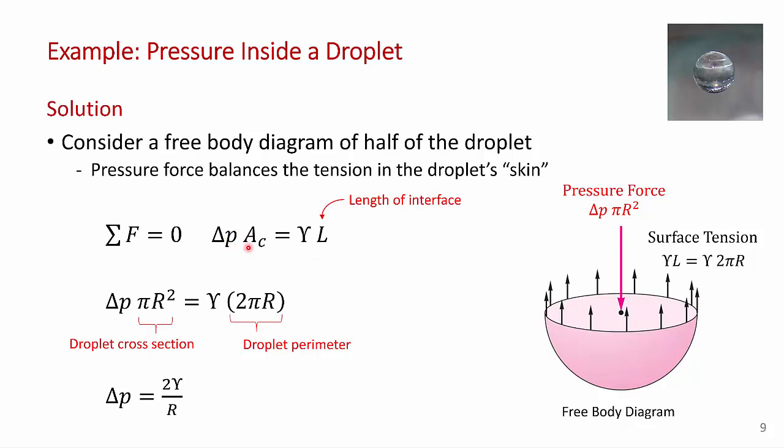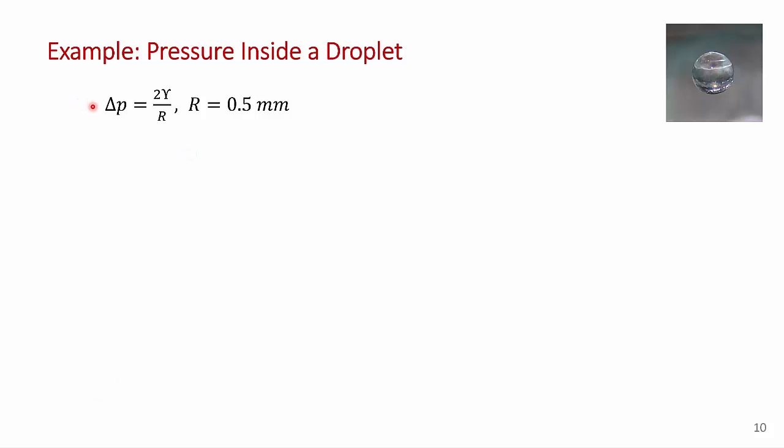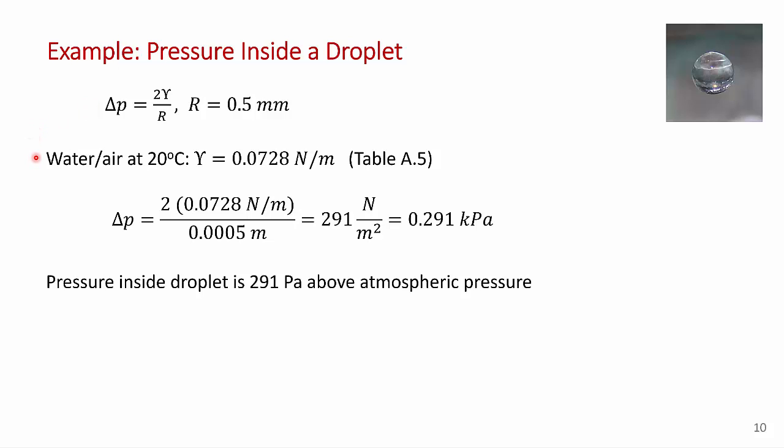As we discussed, the pressure force acts over the cross-sectional area of the droplet, πr² here. And the surface tension force, which is the force per unit length, acts over the droplet perimeter, which is 2πr. And you can check my algebra here. You can see that if you solve for delta p, you get that the pressure inside of a little droplet of water is 2 times the surface tension divided by the radius of the droplet. So I've reproduced that result here. Delta p equals 2ε divided by r. And you're told in the problem statement that the radius of the droplet is half a millimeter. So now you can go to your appendix, table A5, and look up the surface tension of a water-air interface at 20 degrees C, and it's 0.0728 newtons per meter. And now it's just a matter of making the substitutions. 2 times the surface tension divided by the radius of the droplet, being careful to notice that that's half a millimeter.